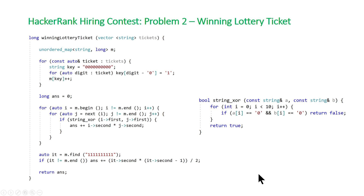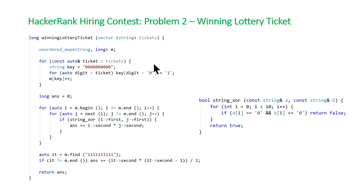Finally, the complexity of this algorithm: the quadratic nested loop is bounded by 1024, so it doesn't drive our complexity. Since the total sum of all ticket lengths is less than 10 to the power of 6, the algorithm is linear in the total length of all tickets. Thanks for watching!